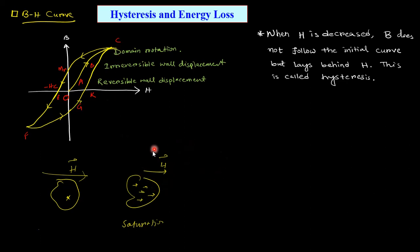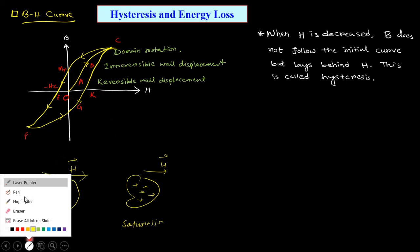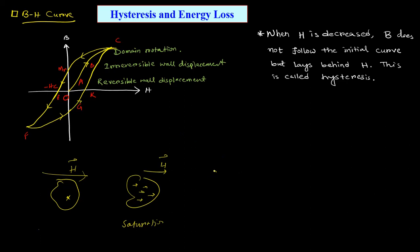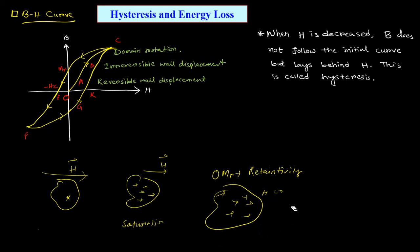After saturation, if you reverse or reduce this field, the magnetization does not follow the original path — it takes a different path. Interestingly, at H equals zero on the return path, there is still an induced magnetic field B. This means even at zero external field some dipoles remain aligned in the previous field direction, giving a net dipole along that direction. This value is known as retentivity, denoted O_R.